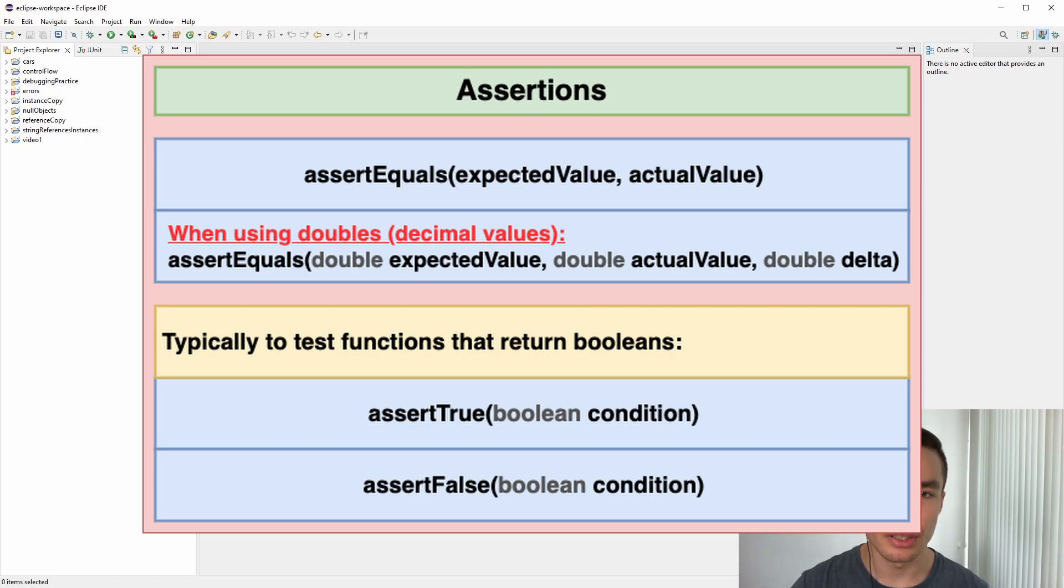The last function is the assertFalse function, which is the opposite of assertTrue. Again, it is used when testing a function that returns a boolean value and we use it when we expect the output to be false for a certain input. For example, if we are testing a function that checks if a number is odd, we would pass in an even number as the input and expect the output to be false.